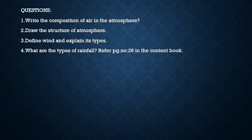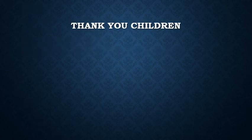Questions for this session: First, write the composition of air in the atmosphere. Second, draw the structure of the atmosphere. Third, define wind and explain its types. Fourth, what are the types of rainfall? For this question, refer to page number 26 in the content book. Thank you, children.